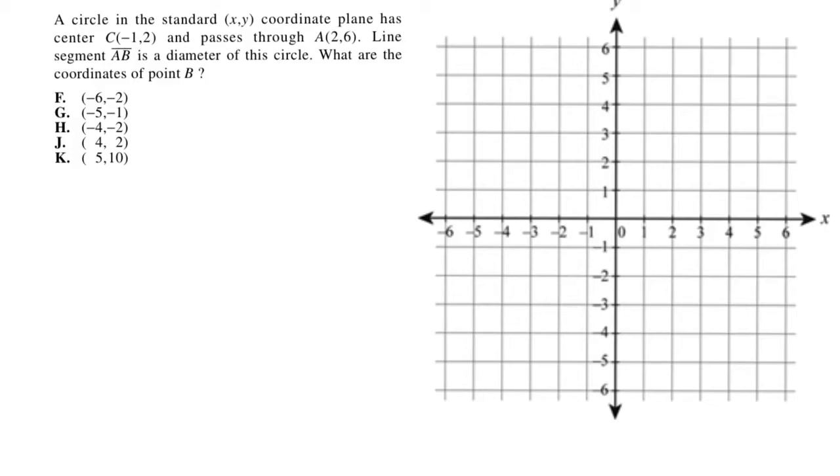The circle in the standard XY coordinate plane has a center at negative 1, 2 and passes through point A which is at 2, 6. Line segment AB is the diameter of this circle. What are the coordinates of point B?